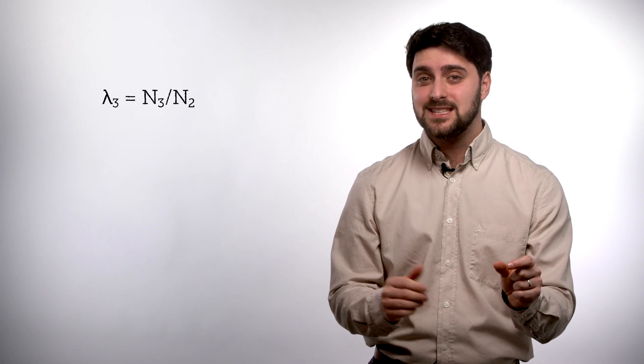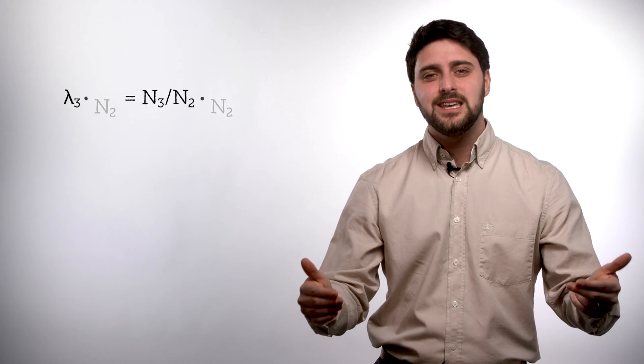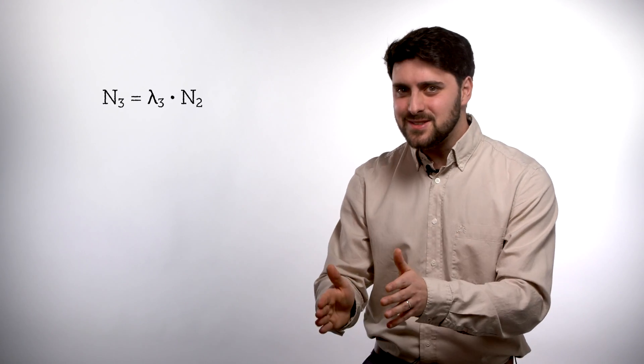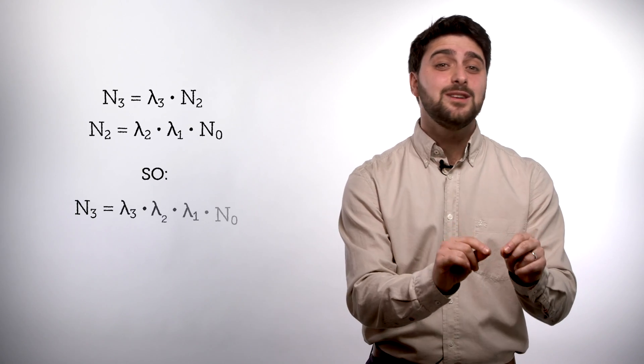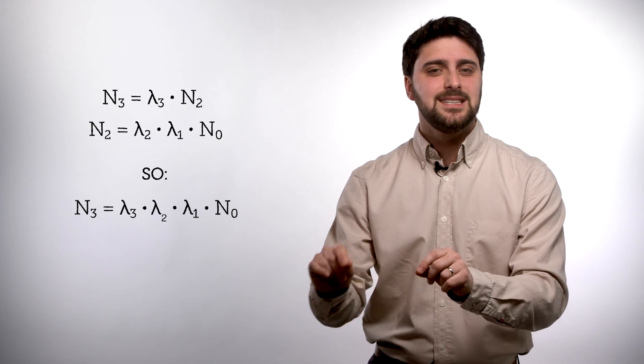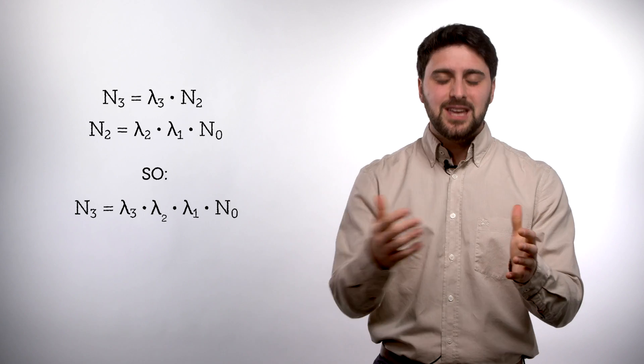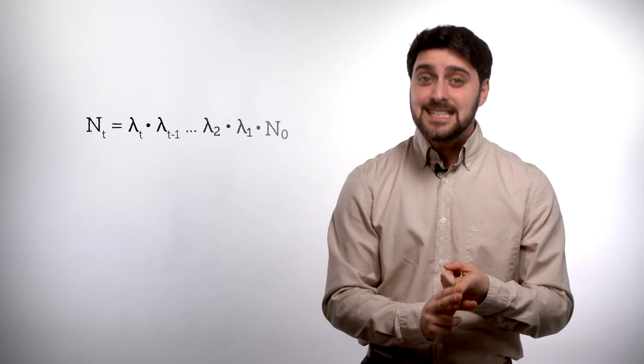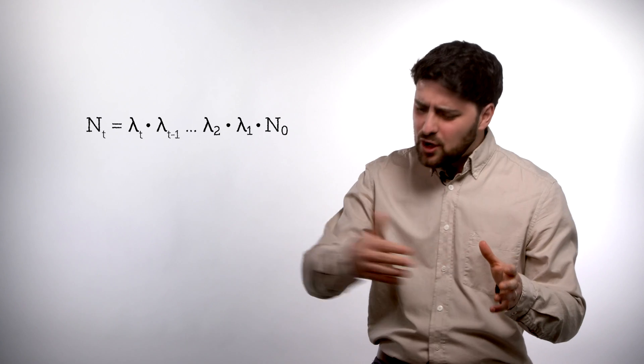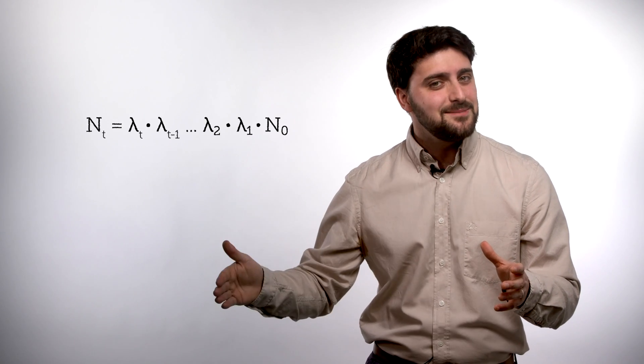For the sake of this exercise, let's do just one more time to see what happens. So N3 over N2 equals lambda 3. Multiply both sides by N2, do the algebra, what we end up with is N3 equals lambda 3 times N2. But we know what N2 equals to. So what we get is N3 equals lambda 3 times lambda 2 times lambda 1 times N0. So you can see that we can do that up until an arbitrary time point t. So Nt will equal lambda t times lambda t minus 1 times all the lambdas all the way to lambda 1 times N0.